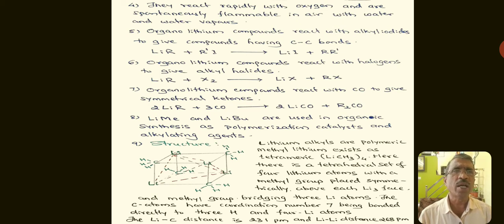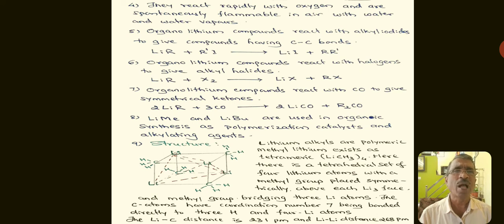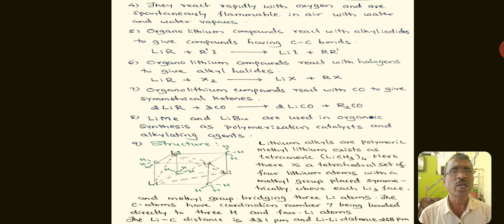Organolithium compounds react with alkyl iodide to give compounds having C-C bonds, or higher alkanes or arenes. When alkyl lithium is treated with alkyl iodide, we get higher alkanes. Similarly, aryl lithium and aryl iodide gives higher arenes. For example, methyl lithium treated with methyl iodide gives ethane, and ethyl lithium reacted with ethyl iodide gives n-butane.